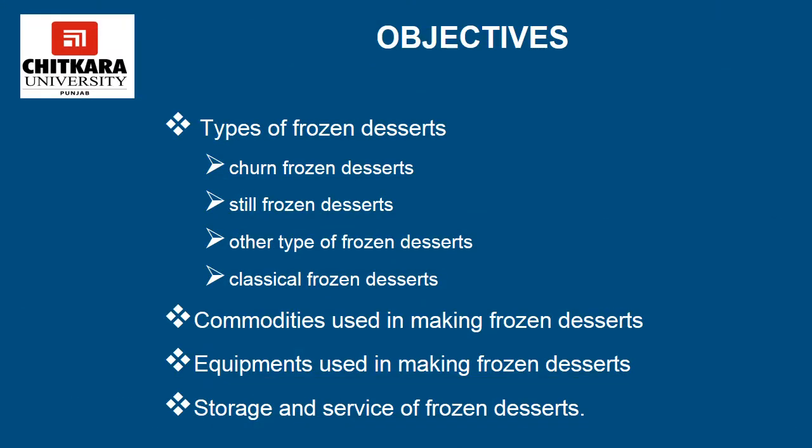The objectives of today's session are: after this session, the students will be able to describe the types of frozen desserts — including churn frozen desserts, still frozen desserts, other types of frozen desserts, and the classical frozen desserts. Students will be able to tell the commodities used in making frozen desserts, identify the equipment used, and understand the concept of storage and service of frozen desserts.